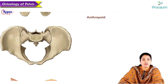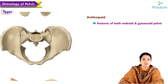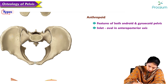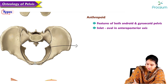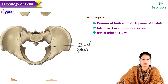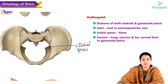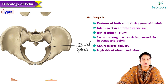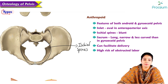The anthropoid pelvis has features of both android and gynecoid pelvis. The inlet is oval, and the ischial spines are blunt. The sacrum is long, narrow, and less curved than a gynecoid pelvis. It can facilitate delivery but carries a high risk of obstructed labour.